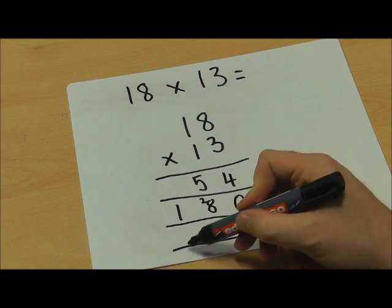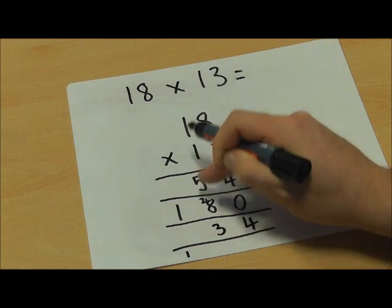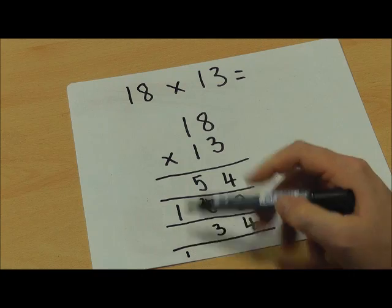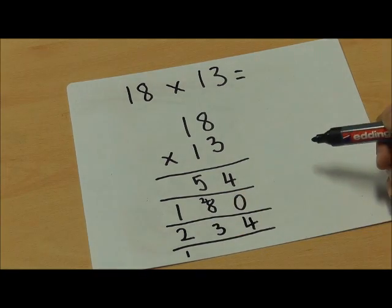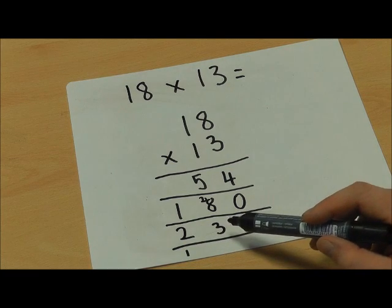5 add 8 equals 13. I haven't included that 2 because that was part of my calculation up here and then 1 add 1 which equals 2. So my answer to 18 times 13 is 234.